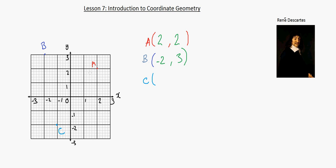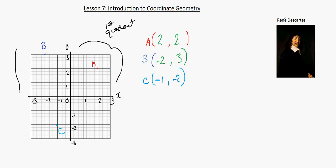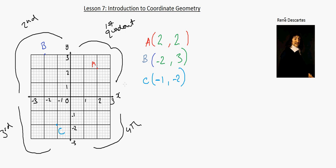So for point C, we go along the x-axis first. We choose minus 1 and we choose minus 2. Now we call these sections quadrants. This is the first quadrant. This would be your second quadrant, this would be your third, and this is the fourth quadrant. So if your teacher wants to test your knowledge, they might say go to the fourth quadrant, and you'll know straight away which section that is.